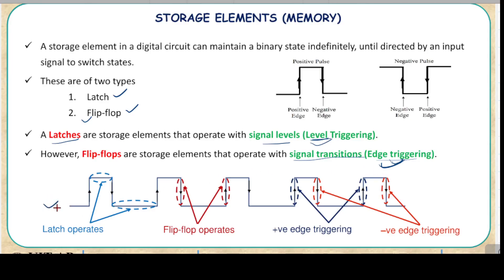Here in this graph, you can see there is a digital graph which goes high and low — a digital or binary graph. See the blue color marked here. These areas represent a level — a steady state. This is a high state, and this is a low state. These are the steady-state levels of a signal, and the latch operates on these levels. It is called level triggering, or it operates with signal levels. Here this is a level for a signal, and here also there is a level — this one and this one are both levels where the latch will work.